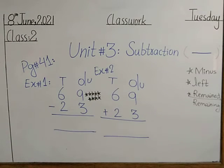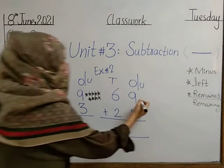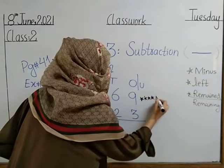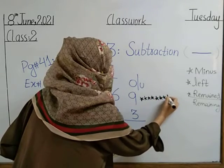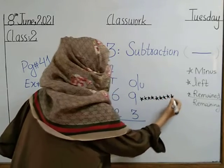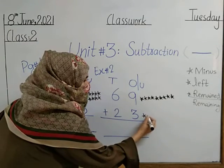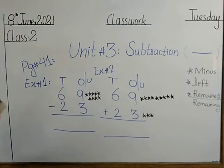We have nine stars. Then we have the number three. We draw nine stars and then cut three stars from the nine.